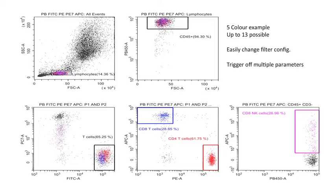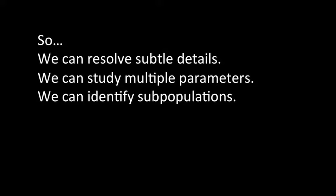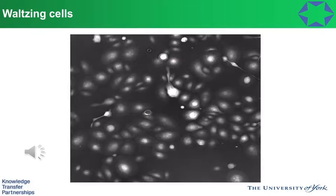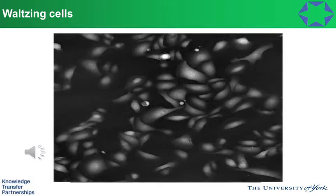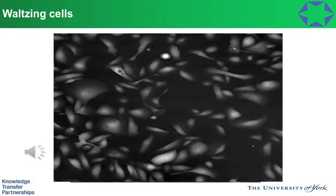Just to give a flavor of some of the multicolor work we did, we've been able to resolve subtle details and study multi-parameters across many different subpopulations. This is not an evolution in flow cytometry, just a bit more power. With that, I'd like to remind you about the individual characteristics of cells by showing these cells all dancing. Not only do we want to know if cells are dancing — we also want to know what tune they're dancing to. Hopefully with more powerful flow cytometry we'll get a handle on what the cells are actually doing rather than just what is there.